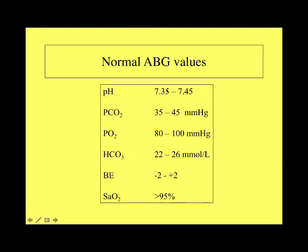Here are normal blood gas values — easy to remember: pH 7.35–7.45, and PCO2 35–45 mirrors the digits after the decimal point of pH. PaO2 is normally 80–90 at room air (21% oxygen); on bypass, we target a higher level of 150–250. The bicarb is 22–26, and base excess ±2 around 24. Oxygen saturation should be greater than 95%.